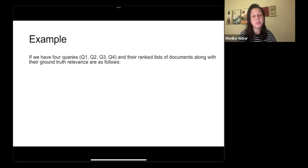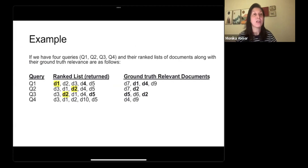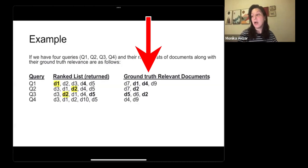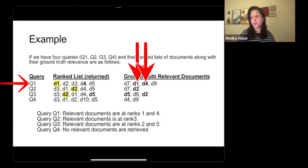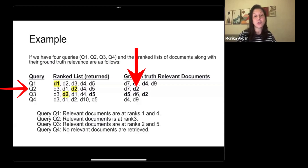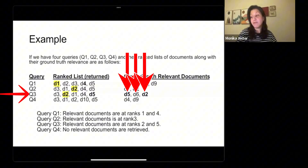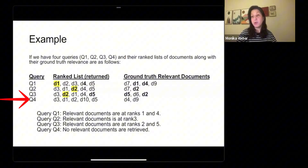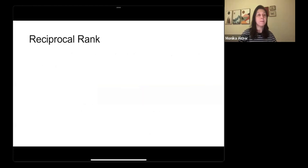Here is an example with four queries: Q1, Q2, Q3, and Q4. The first column has the queries, the second column is what our system is producing, and the third column has the ground truth — which document should be returned. For query 1, the relevant documents D1 and D4 show up at positions 1 and 4. For query 2, document D2 shows up at position 3. For query 3, the ground truth has three relevant documents — D5, D6, and D2 — but only D2 and D5 appear in our results. Query 4 does not return any relevant document.